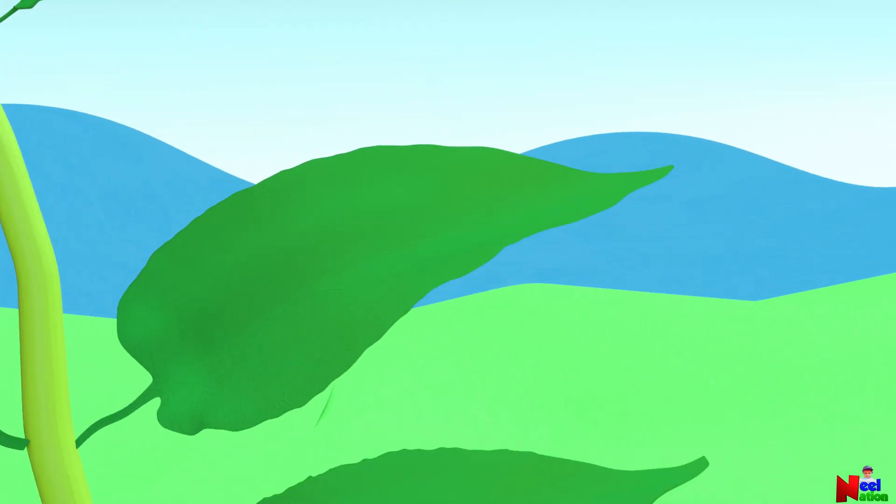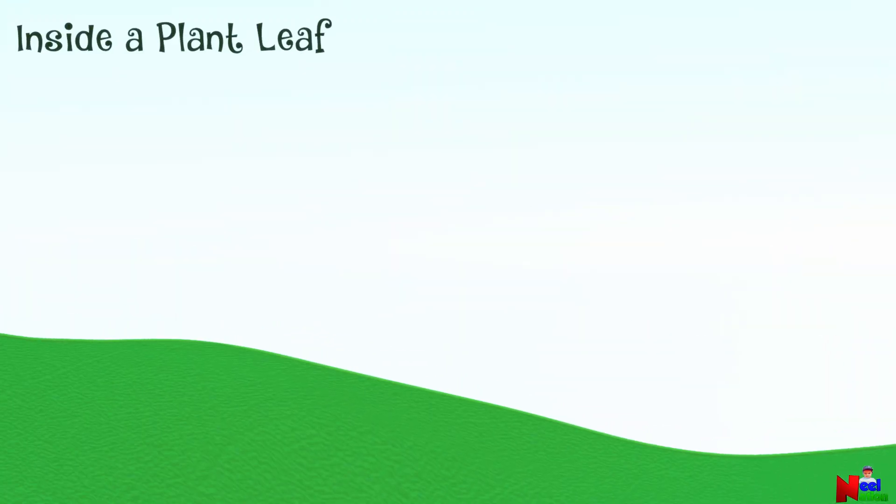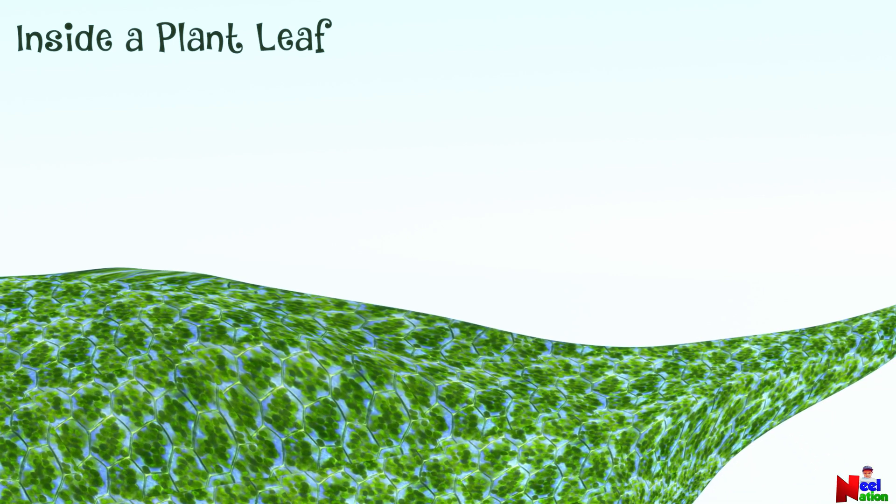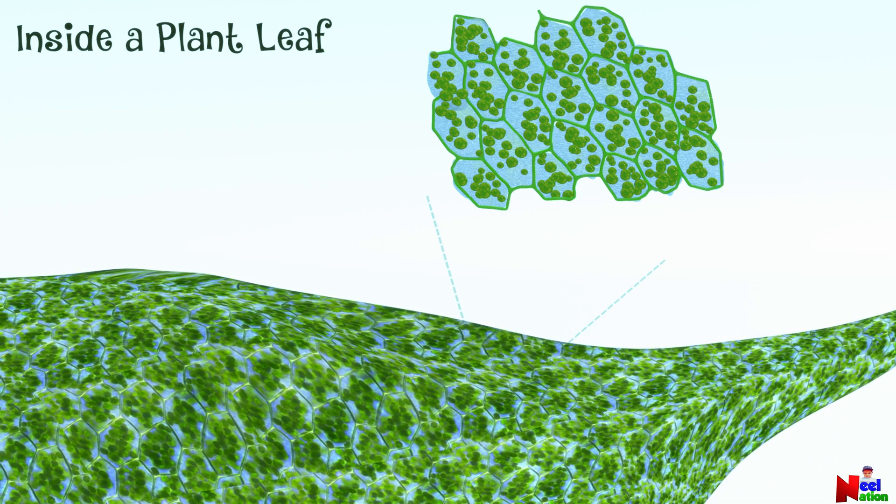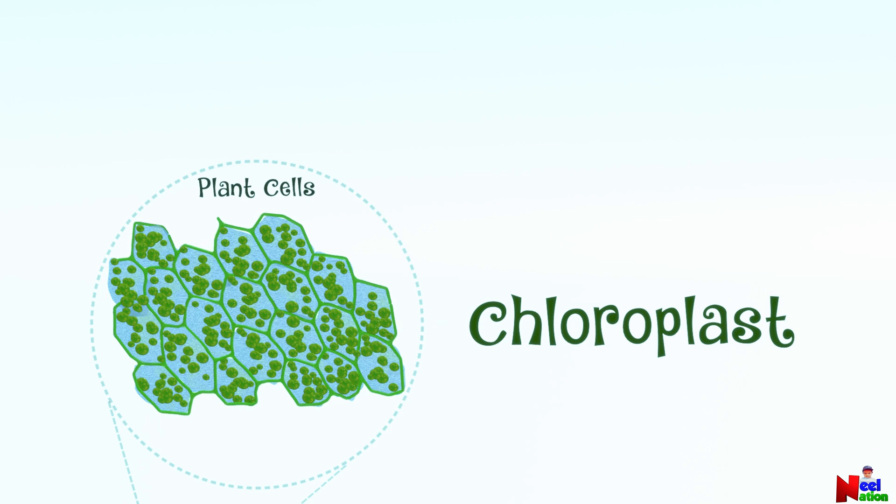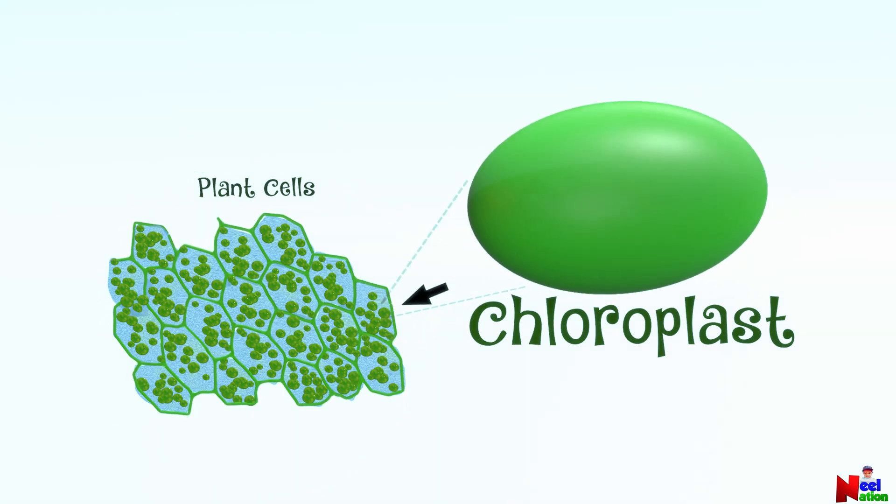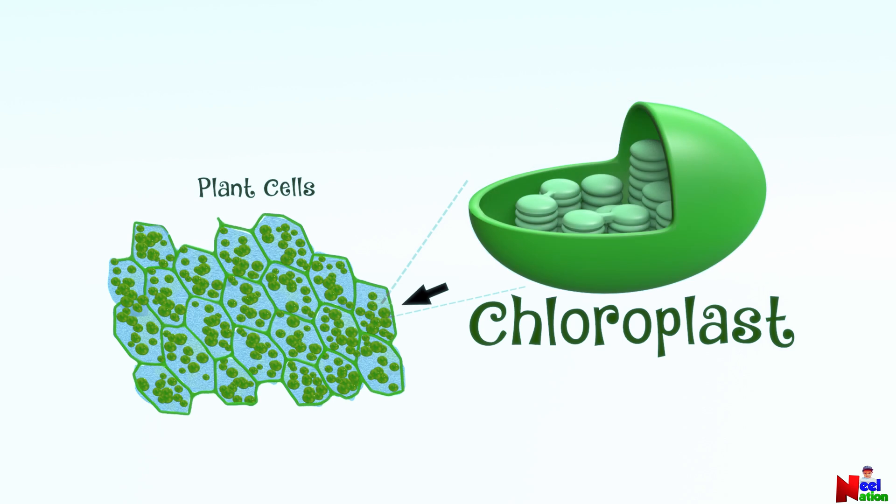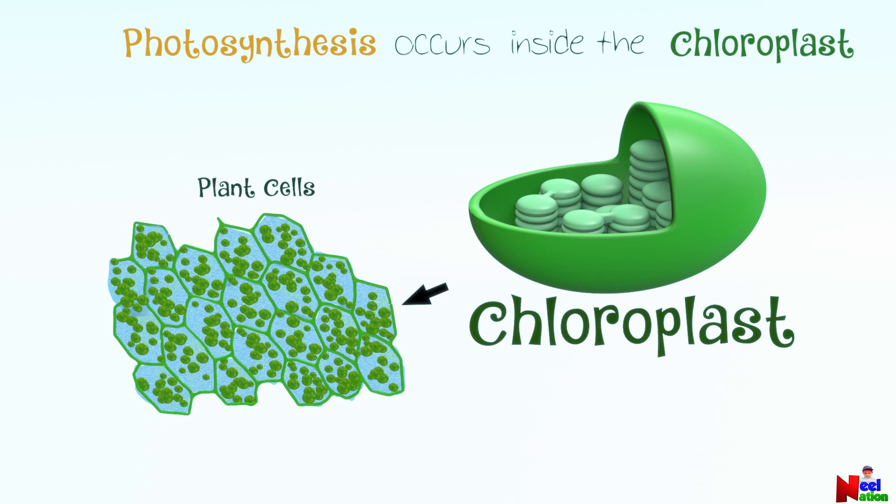Would you like to see where the plants cook its own food? Let's take a look inside the leaf. Do you see those tiny green structures? They are called chloroplasts. Chloroplasts are grouped inside the plant cells. As we know, cells are the tiny building blocks that make up all living things. These chloroplasts are like the plant's kitchen, where it makes its food. This is also where photosynthesis happens.